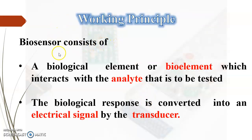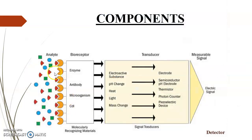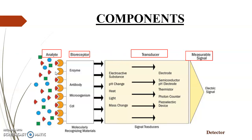The working principle is that the biosensor consists of a biological element or bioelement which interacts with the analyte. The bioelement and analyte interact with each other, and the biological response is converted into an electrical signal by a transducer. So we have the analyte, bioreceptor, transducer, and measurable signal, which is sent to a detector.